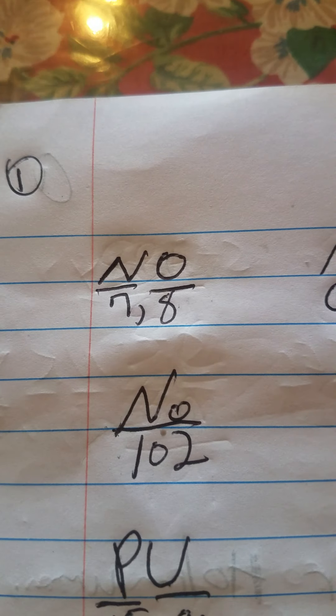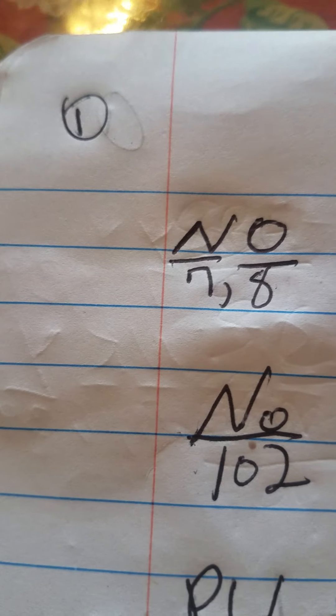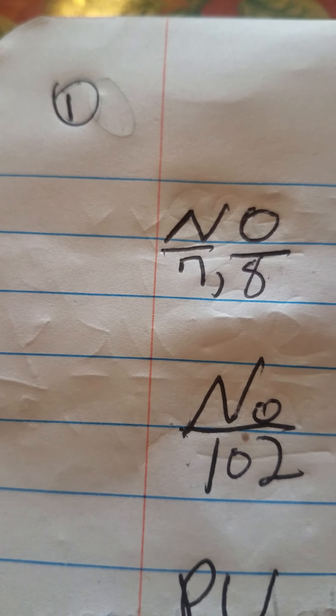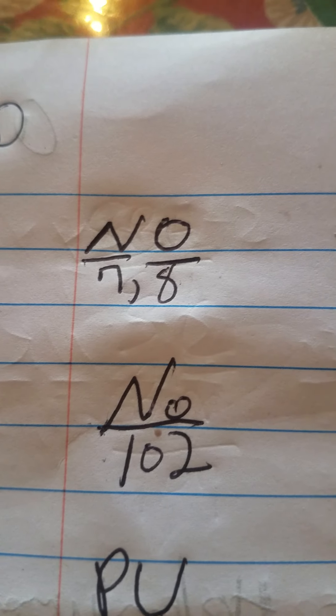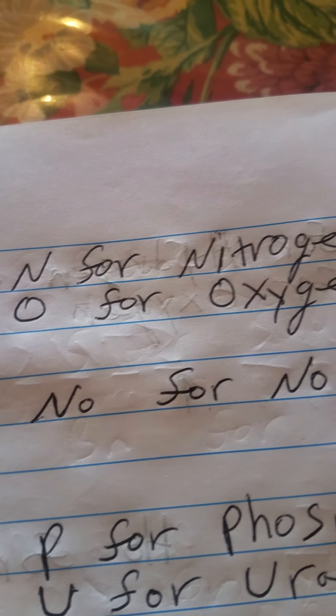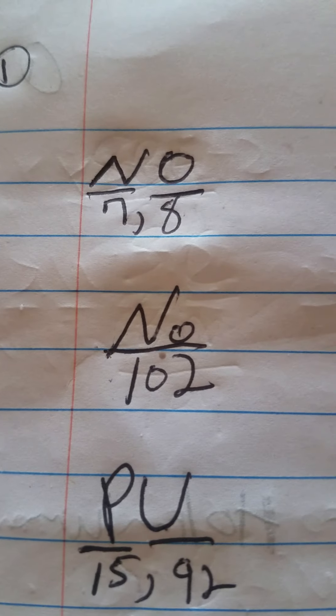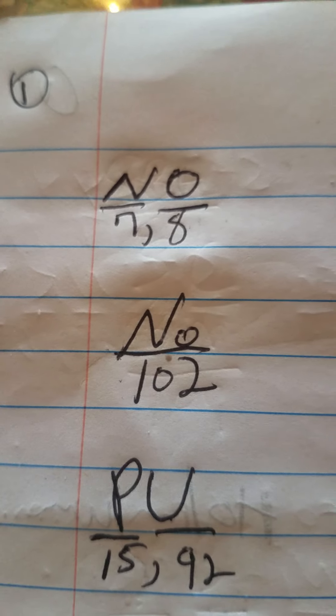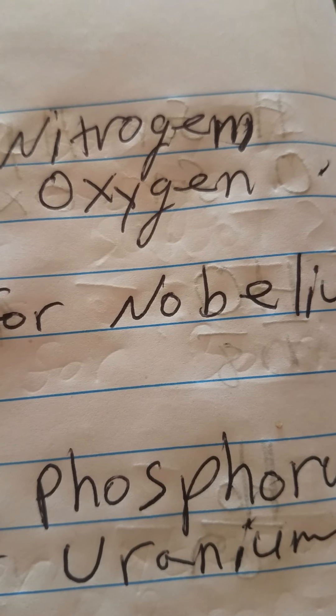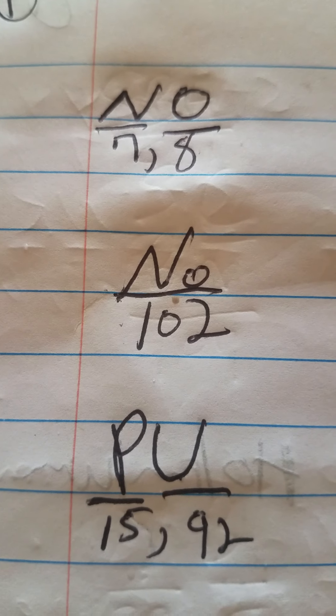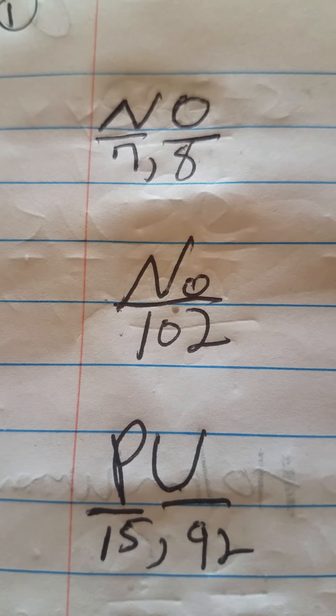Likewise, if you have a capital N and a capital O, you have N for nitrogen and O for oxygen — atomic number 7 for nitrogen and atomic number 8 for oxygen. But if you take a capital N and put a small O next to it, you get nobelium, spelled N-O-B-E-L-I-U-M, with the atomic number of 102.